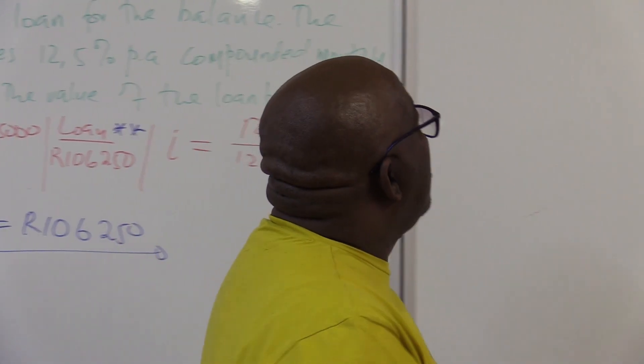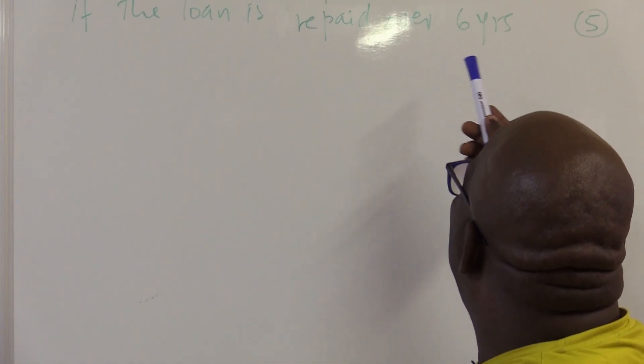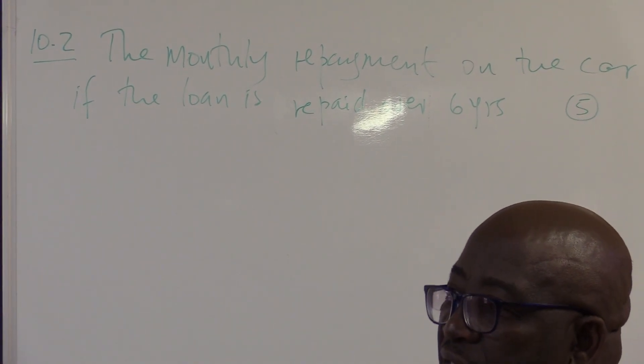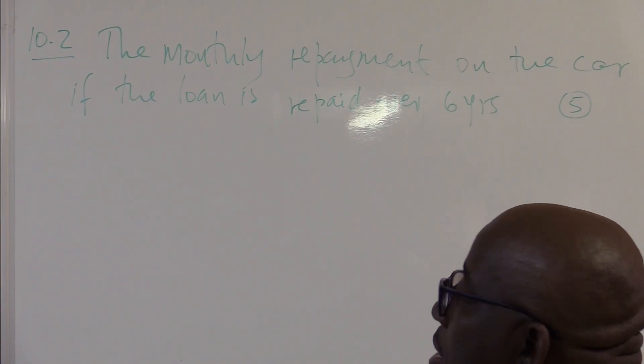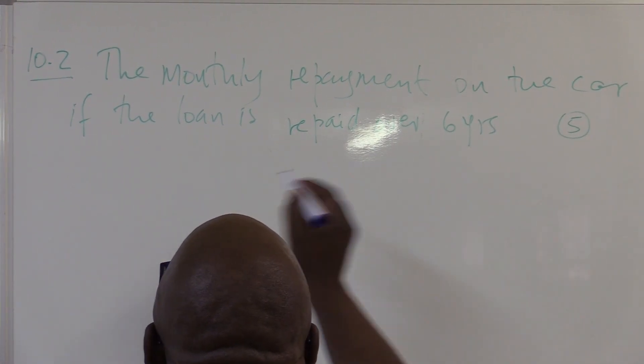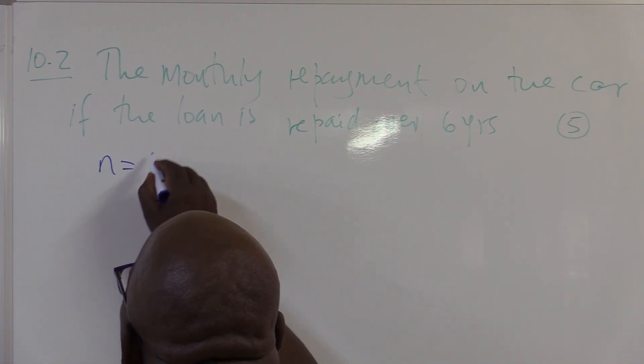Let's look at the next question that they've asked. Calculate the monthly repayment on the car if the loan is repaid over six years. Here comes N. The same information is also applying here. And yet we've added N. It is paid over six years. N is equal to six.